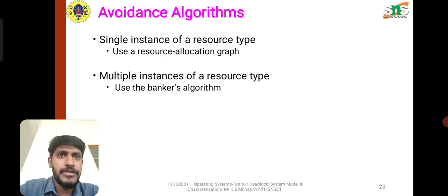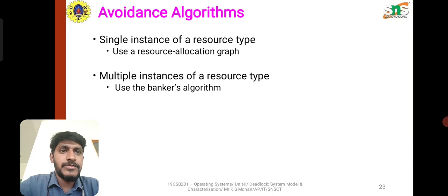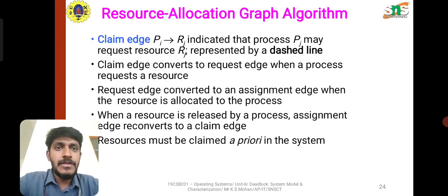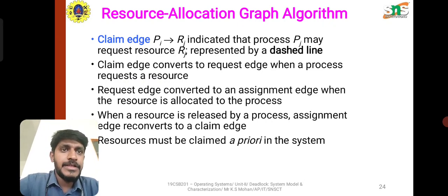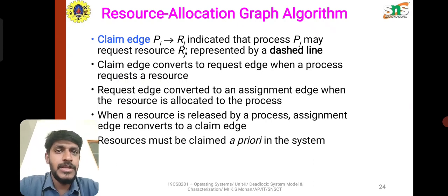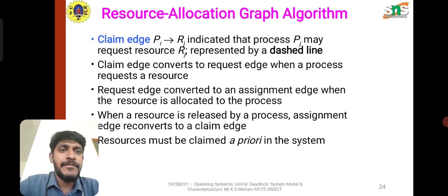Avoidance of deadlock can use different kinds of algorithms. The avoidance algorithm for a single instance of resource type uses the resource allocation graph, while multiple instances of resource type use the Banker's algorithm. In the resource allocation graph, P indicates a process and R indicates a resource. A claim edge represents that a process may request a resource, shown as a dashed line. The claim edge converts to a request edge when the process requires the resource, and the request edge converts to an assigned edge when the resource is allocated to the process. The resource must be claimed a priori in the system.